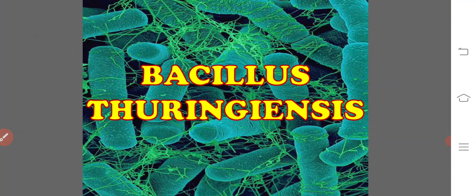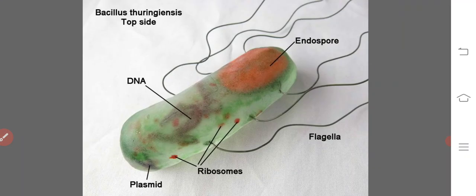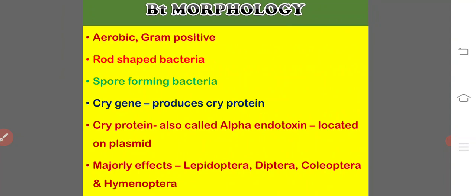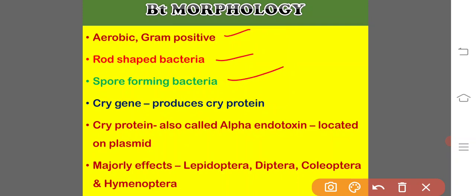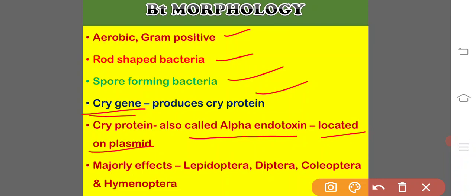Coming to Bacillus thuringiensis — it is a type of bacteria. In terms of morphology, it is an aerobic, gram-positive, rod-shaped, spore-forming bacterium. It has a certain gene called the CRY gene, which produces CRY protein, also called alpha-endotoxin, which is located on the plasmid. It majorly affects Lepidoptera, Diptera, Coleoptera, and Hymenoptera insects.